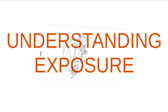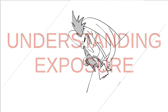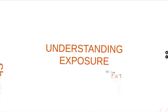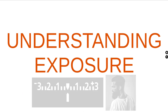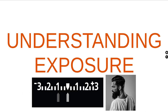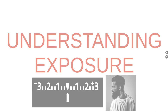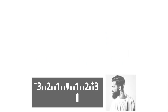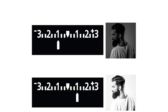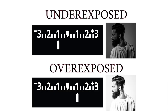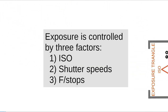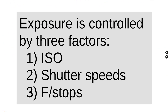In this video, we're going to cover the three main controls of exposure. Understanding exposure is pretty simple and complex at the same time. Essentially, you just want to know how to get a photograph correctly exposed based on your creative or technical intentions — a photograph that's not too bright or too dark, which would be called overexposed or underexposed. Exposure is controlled by three factors in the camera: ISO, shutter speeds, and f-stops.